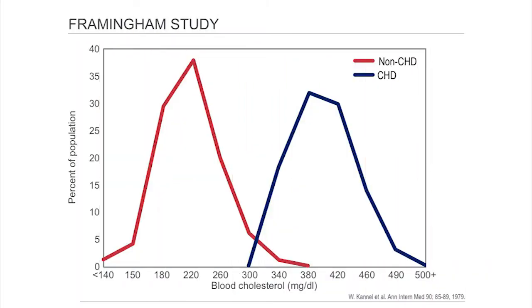One of the first big associational studies was the Framingham study, in which a population in Framingham — a small town outside Boston — with 5,000 men and women were studied prospectively to see what factors could predict whether or not they had heart attacks. One factor was cholesterol in the blood. Medical students will say it was the Framingham study which proves that cholesterol causes heart disease, because the higher the cholesterol the quicker they died from heart disease.